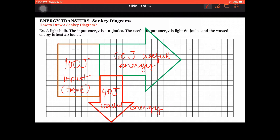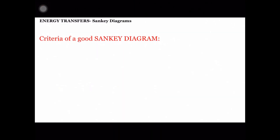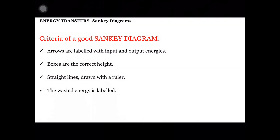If you want, you can also calculate the efficiency of this, but we're going to do that in the classroom afterwards. What makes a good Sankey Diagram? First, arrows are labeled with input and output energies. Second, boxes are the correct height. Third, straight lines drawn with a ruler. And finally, the wasted energy is also labeled. All of these things should be seen in your Sankey Diagrams.